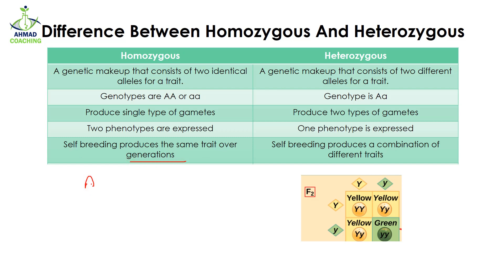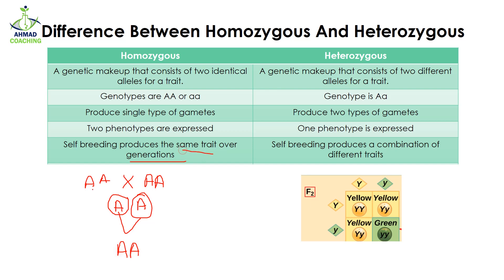Self-breeding of homozygous produces the same traits over the generations. When we cross capital A capital A with capital A capital A, all the gametes will have the A allele, and when they fuse with each other we will again have capital A capital A, so the same trait is expressed throughout the generations.